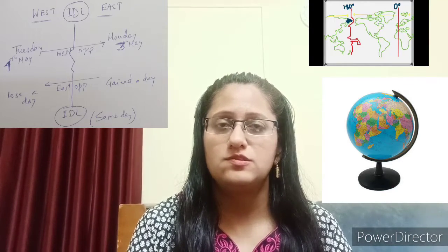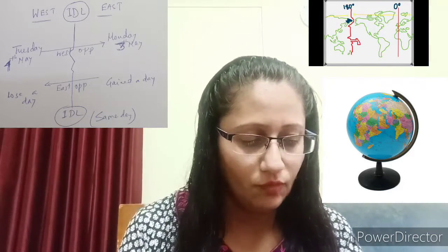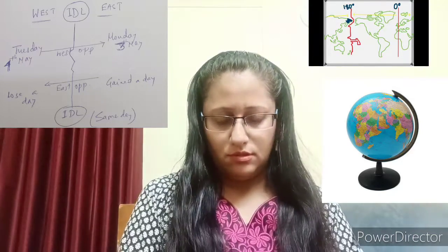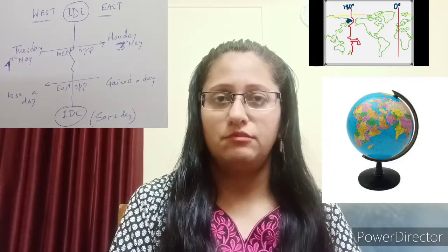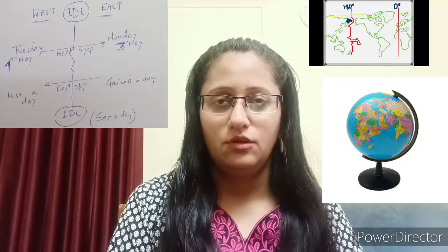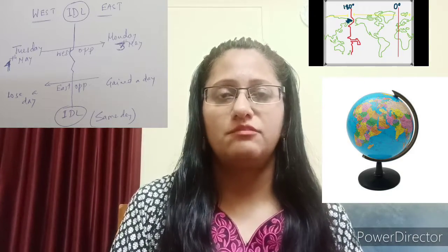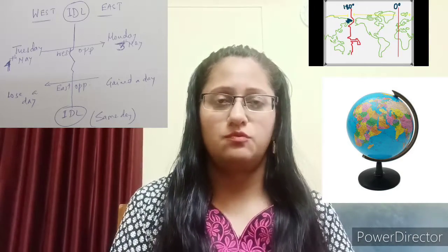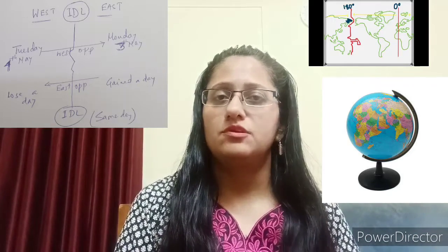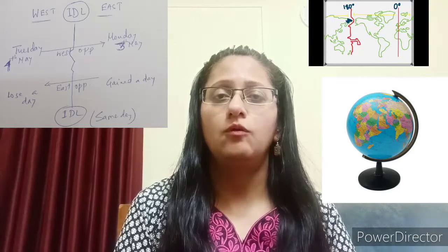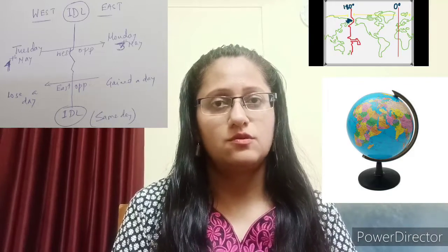In this way, a change of calendar date is experienced by the traveler when they cross the International Date Line. To conclude, crossing the International Date Line causes a change of date depending on which direction the traveler is heading — whether east or west — and they may either gain a day or lose a day.